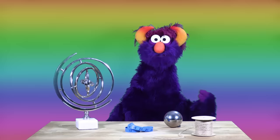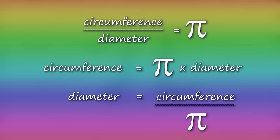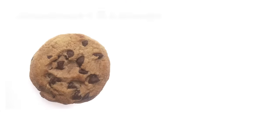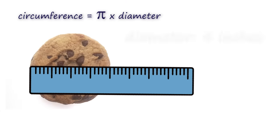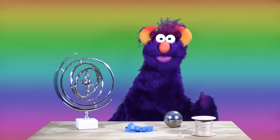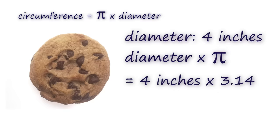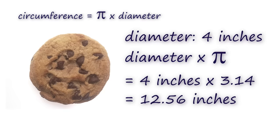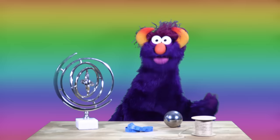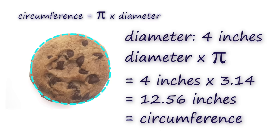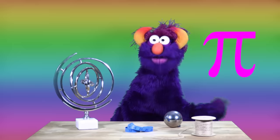This means we can also use pi to find out the circumference or the diameter. Let's try it. Here is a cookie that is a circle. Let's measure across — four inches. That's a pretty big cookie! Now multiply that by pi: four times 3.14. We get 12.56 inches. Is that the circumference? Let's check — measure around the cookie. It is! Wow! Pi is a powerful little number, I tell you what.